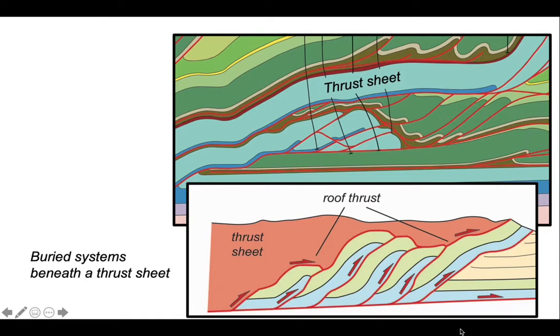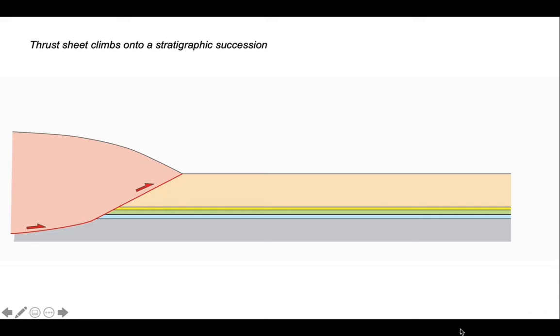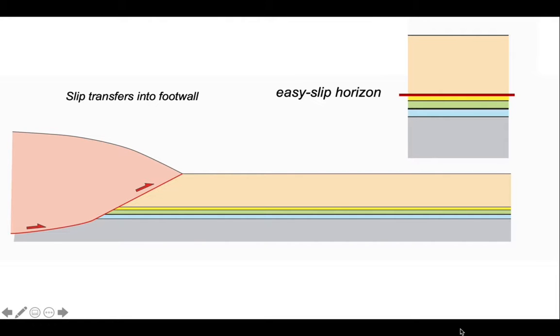So how does this system develop? Let's step back and think in some idealized cartoons. So let's imagine we've got this big pink thrust sheet running across a stratigraphic succession up to the Earth's surface, accommodating lateral motion. The first thing we're going to do is transfer the slip into the footwall and bulldoze away the upper part of the stratigraphic succession.